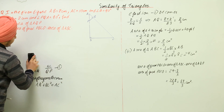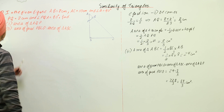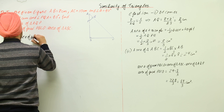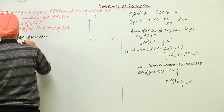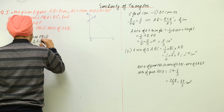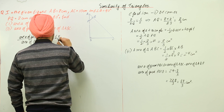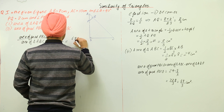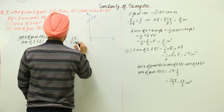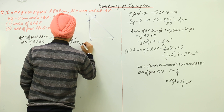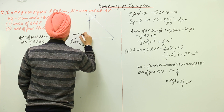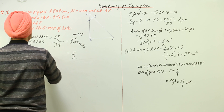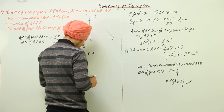To find the ratio, we divide the area of quadrilateral PBCQ by the area of triangle ABC: (64/3) ÷ 24, which equals 64 over 72. Simplifying by dividing by 8 gives 8 over 9. So the ratio of the areas is 8 : 9.